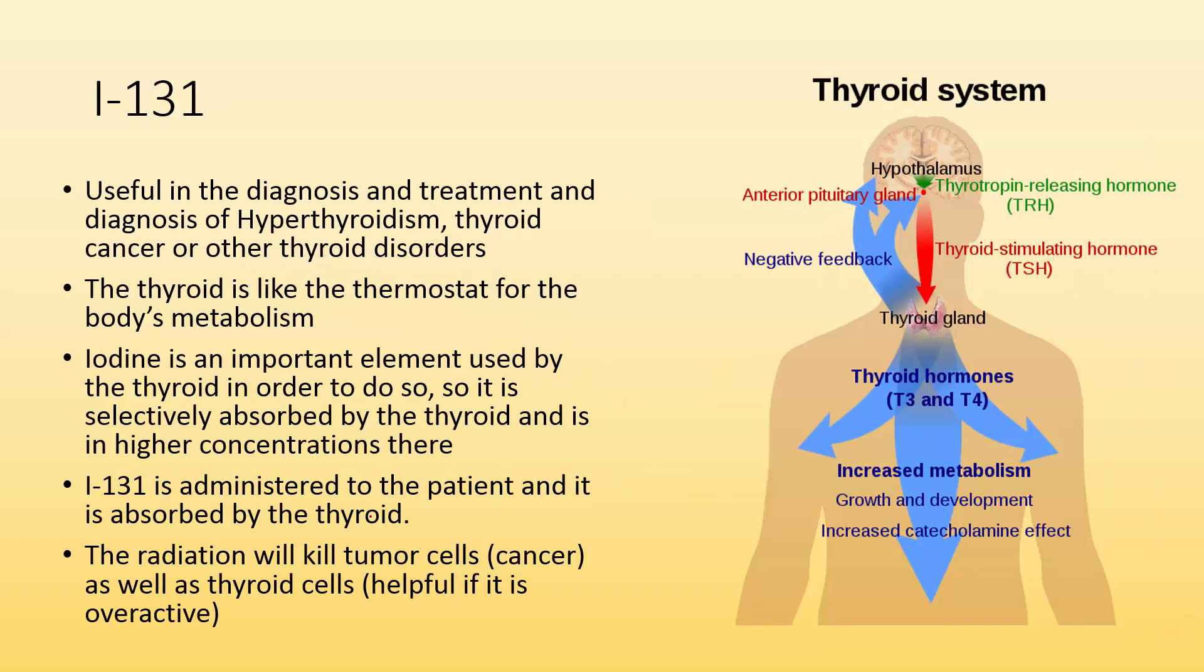We have iodine-131. Iodine-131 is useful in diagnosis and treatment of hyperthyroidism or thyroid cancer or other thyroid disorders, and the reason it's useful is because the thyroid needs a lot of iodine. So if we use radioactive iodine, it'll target that gland specifically more so than the rest of our organs in our body. The thyroid is like a thermostat for the body's metabolism. The thyroid tells it to speed up, slow down, burn up more energy, or slow it down so we can save it. And iodine is an important element used by the thyroid in order to do so. It's selectively absorbed into that organ more so than it would be like our stomach or our brain. The thyroid needs that iodine.